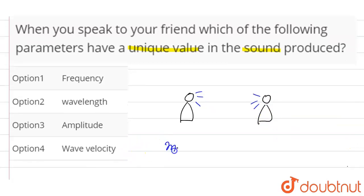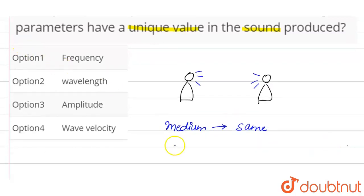as the medium in which you are talking is same for both of you, and we also know that wave velocity depends on medium. Therefore, we can say the wave velocity will have unique value